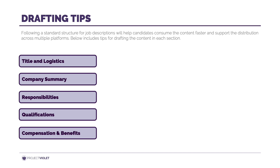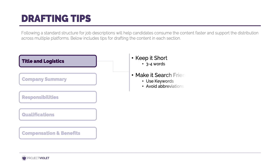Let's start with title and logistics. For this section, keep the role title short — about three to four words at most. Make it as search-friendly as possible, using keywords that candidates will likely search for, and avoid abbreviations, acronyms, or clichés like "a ninja of this or that," because people don't typically search for jobs with that kind of verbiage.